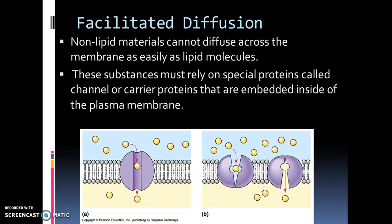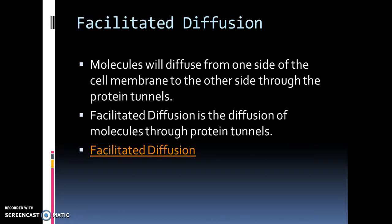Facilitated diffusion: non-lipid materials cannot diffuse across the membrane as easily as lipid molecules. These substances must rely on special proteins called channel proteins, which are embedded inside the plasma membrane. Molecules are diffused from one side of the cell membrane to the other through these protein tunnels — also called integral or transmembrane proteins. Facilitated diffusion is the diffusion of molecules through protein tunnels, still moving from high concentration to low concentration.